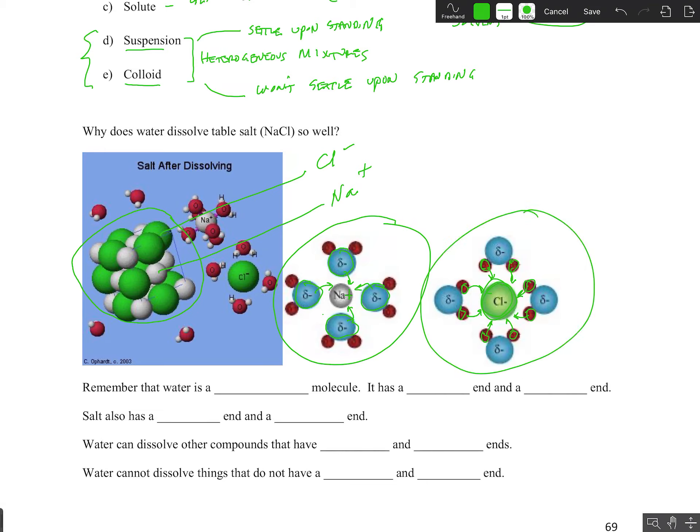Now, as a solid, sodium chloride cannot flow. But when it's surrounded by water molecules, it becomes part of the liquid and it can now flow. And so these sodium and chloride ions flow away from the crystal. And eventually, the entire crystal can become dissolved in the water because all of those water molecules can surround the sodium and chloride ions.